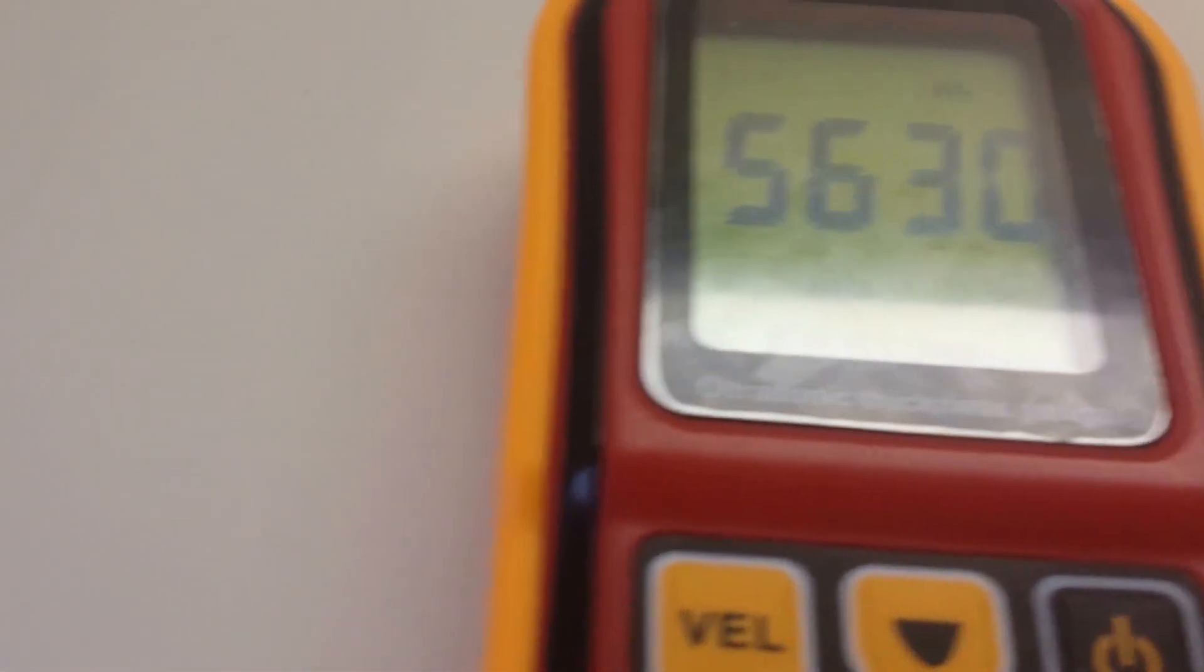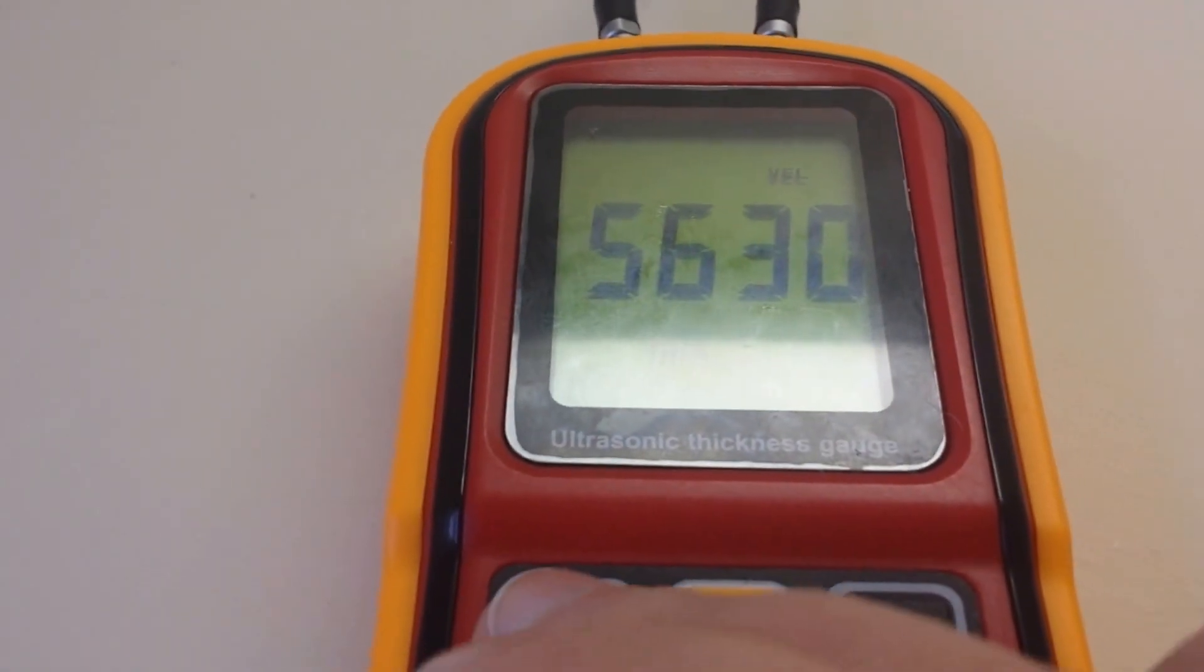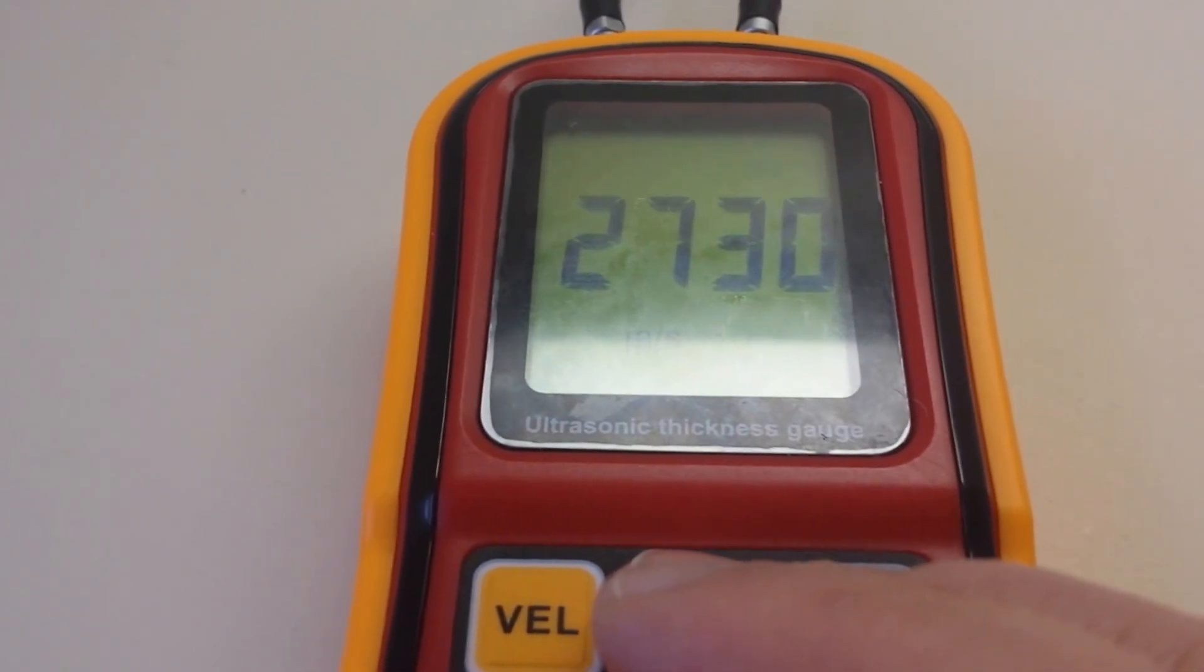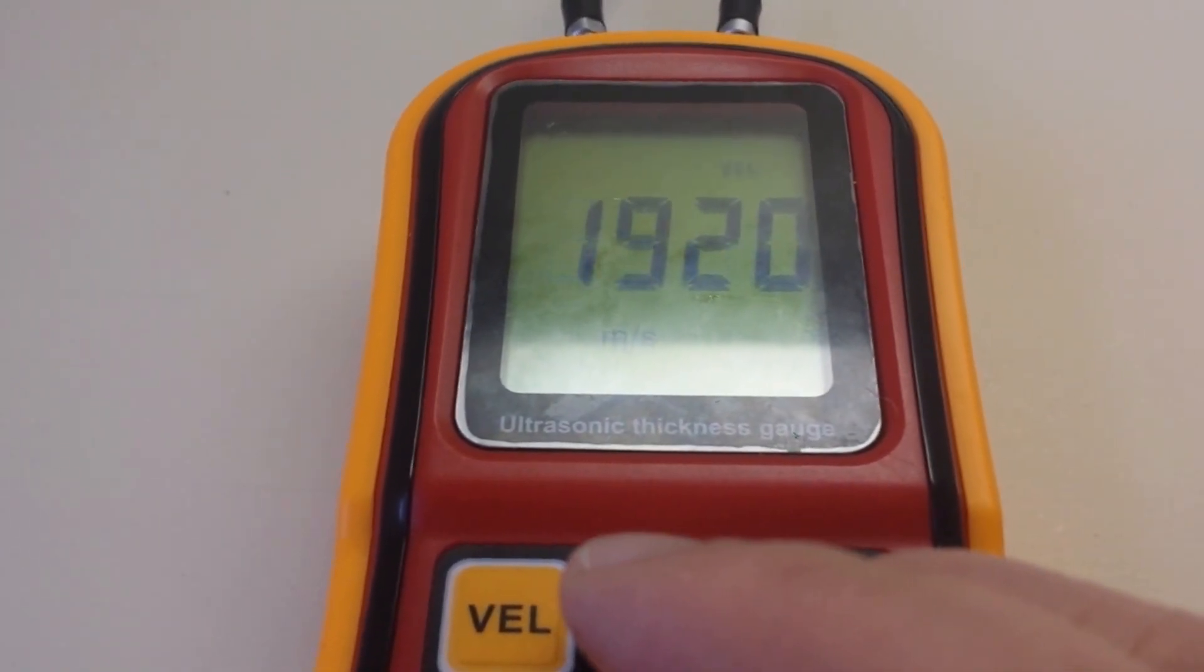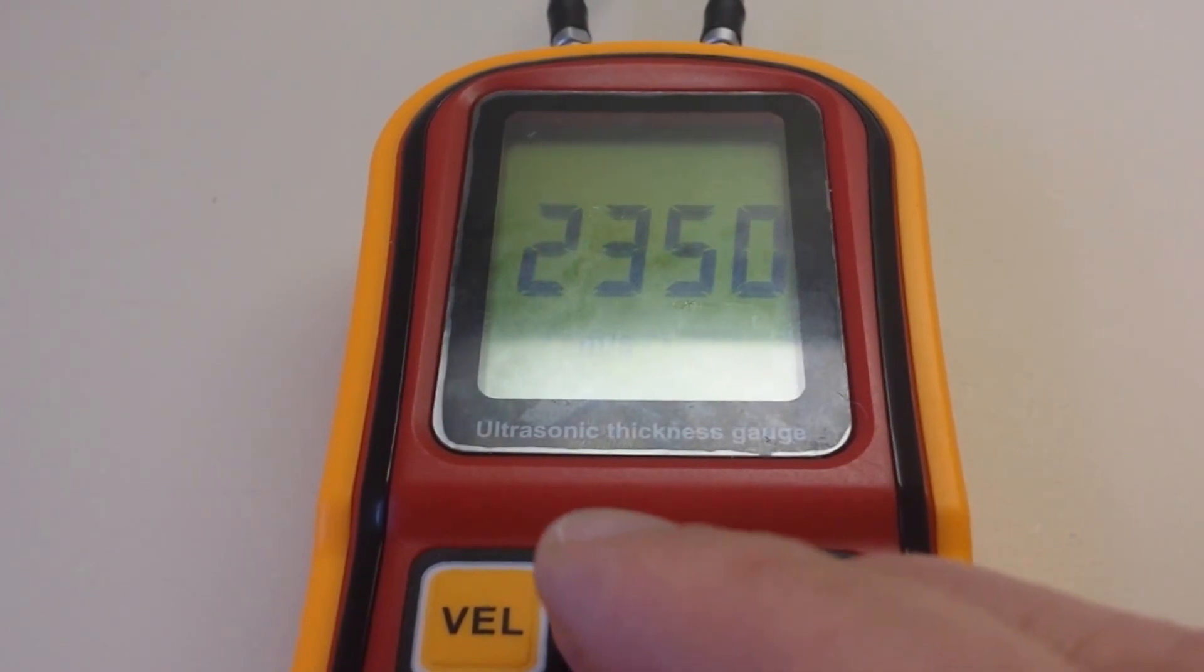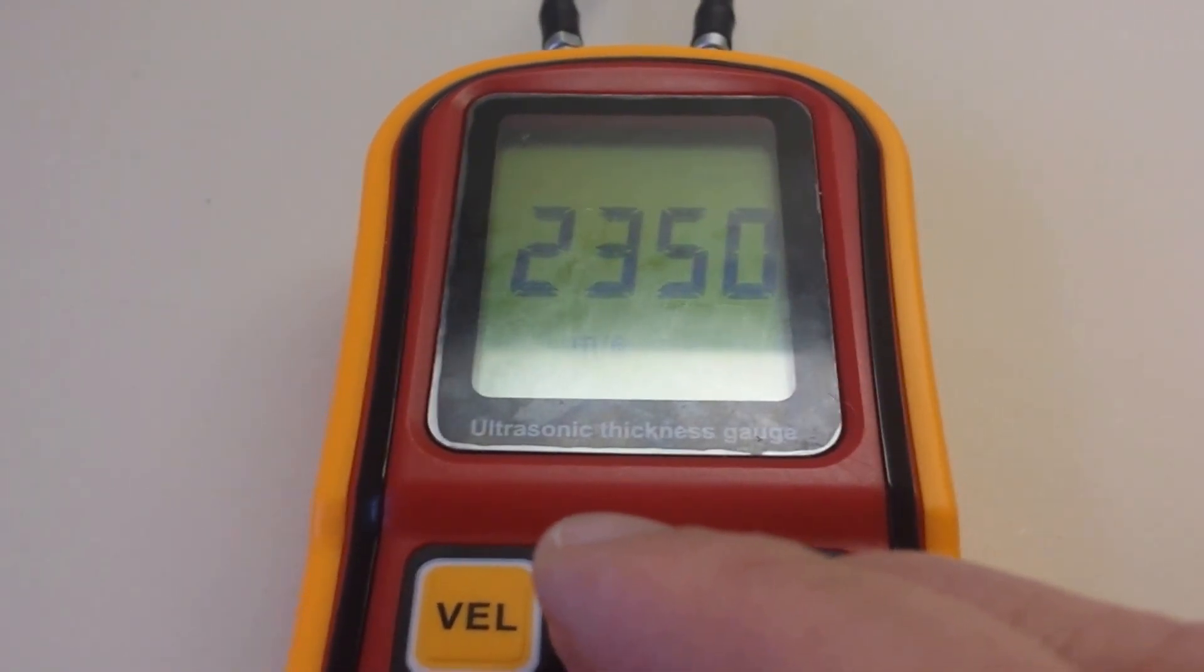You can change this to some other speed if you have another material. Gold 3240, silver 3600, copper - you can test your copper coins as well.